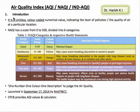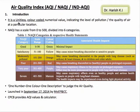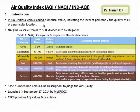Hi, welcome. I'm Harish, talking about air quality index. It's a unitless value — it does not carry units like liter, meter, grams, etc. So it's a unitless, color-coded numerical value indicating the level of pollution or the quality of air at a particular location.